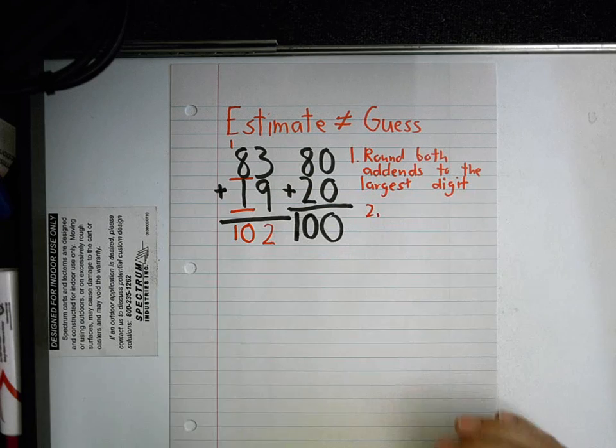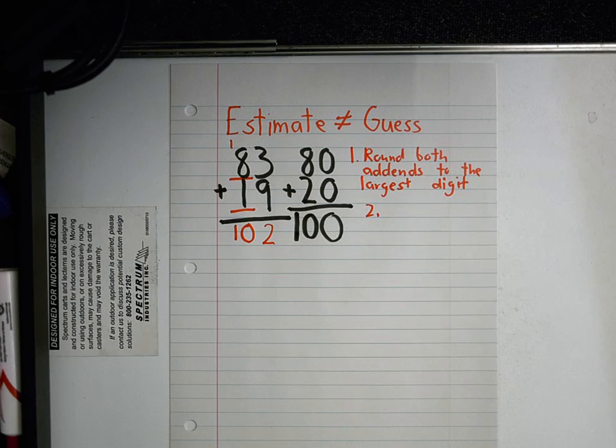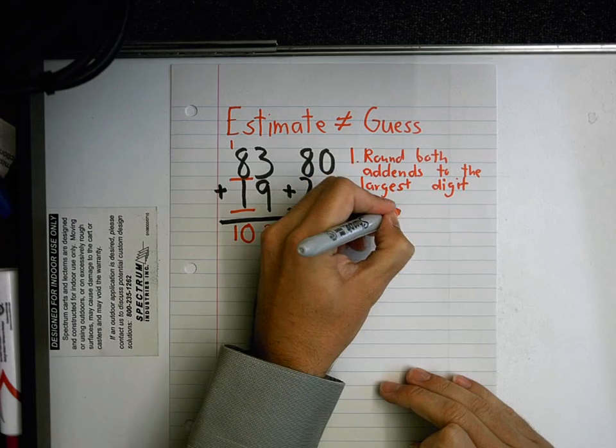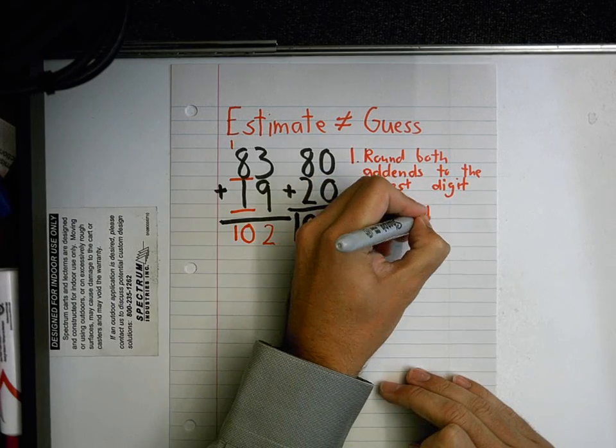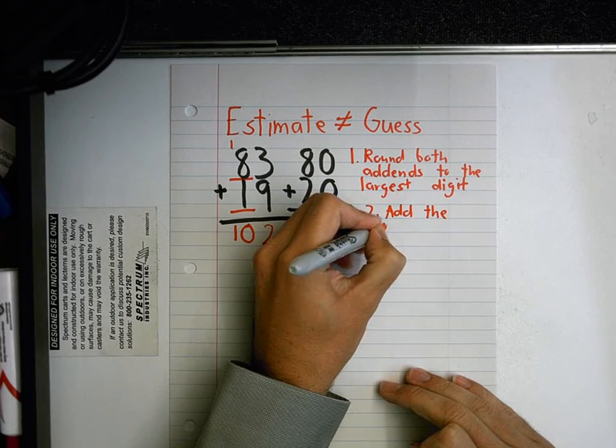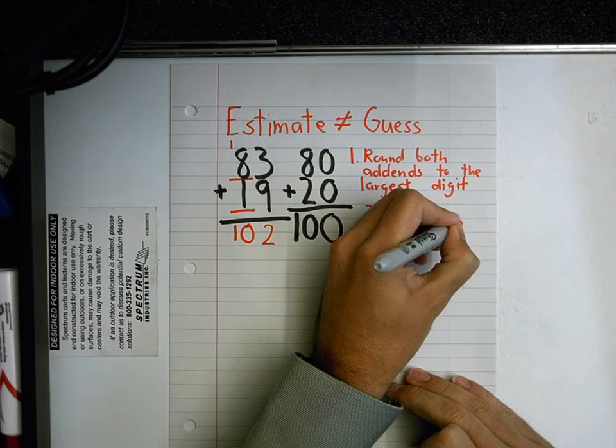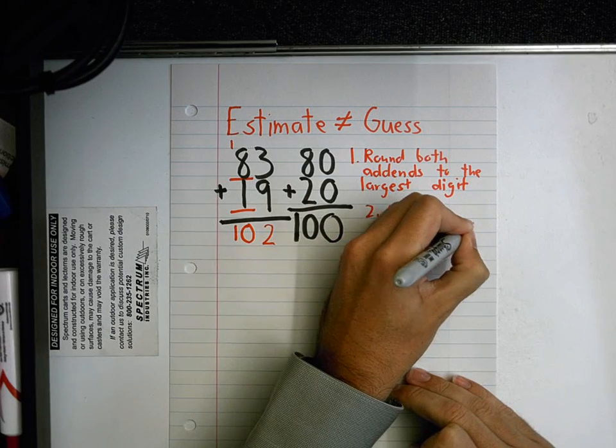Okay, so what was my step number two after I rounded the numbers? What did I do after that? Marina? Yeah, add the rounded numbers.